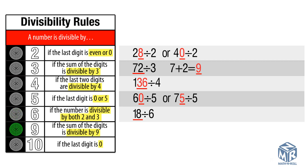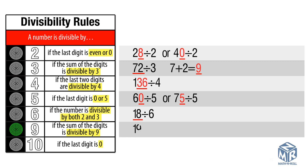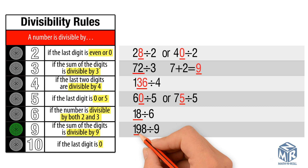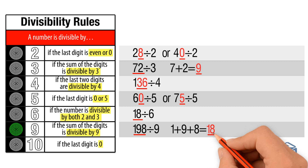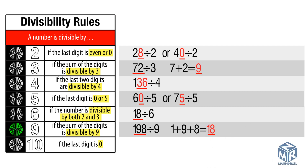A number is divisible by 9 if the sum of the digits is divisible by 9. 198 divided by 9: 1 plus 9 plus 8 equals 18, and 18 is divisible by 9, so 198 is divisible by 9.